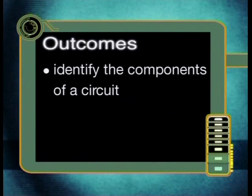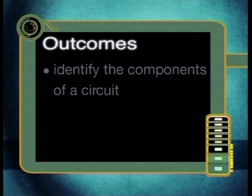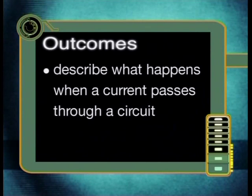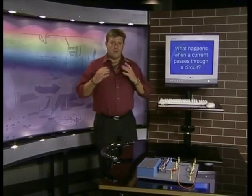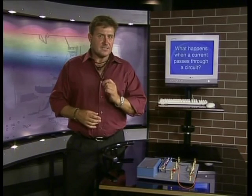By the end of this lesson you should be able to identify the components of a circuit and describe what happens when a current passes through an electrical circuit. Remember, we defined that electric current is the rate of flow of electrical charge. Electric current is thus the flow of charge through an electrical conductor such as a length of copper wire. An electrical circuit is the unbroken path through which the electric current flows.